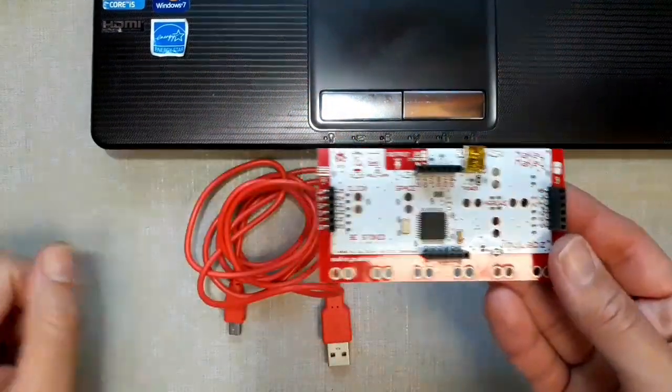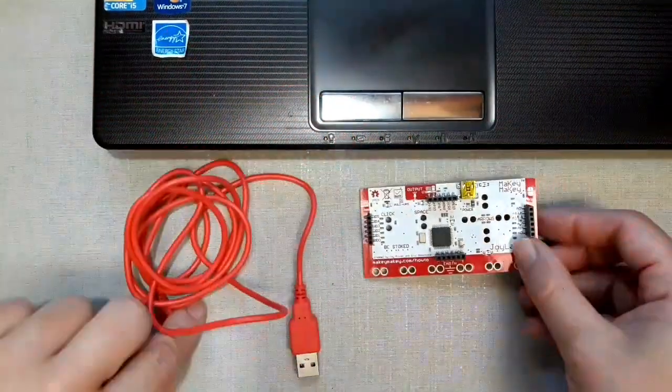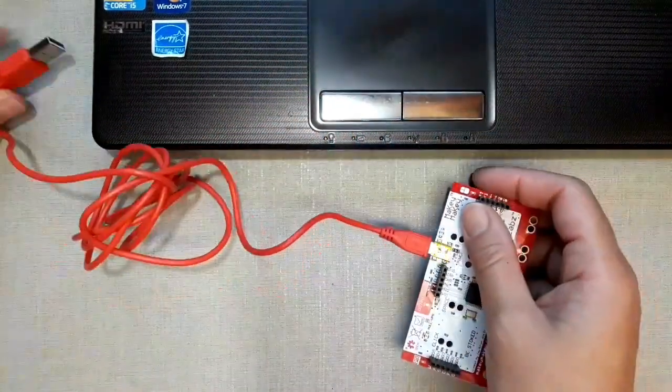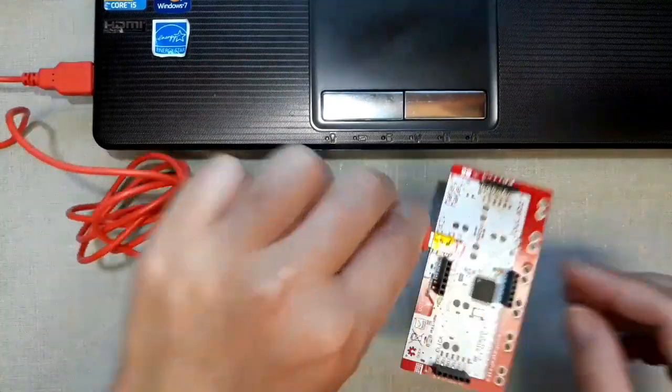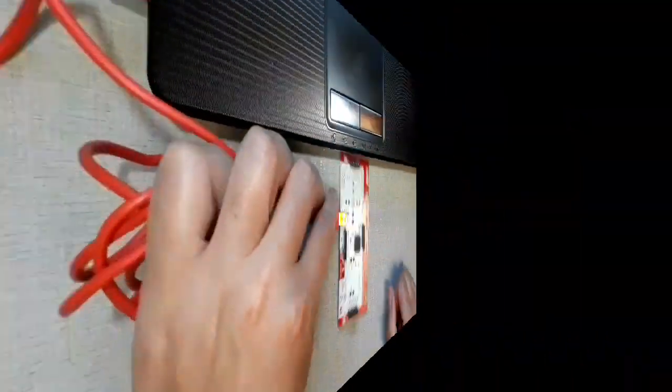Step 1. Connect the Makey Makey Board to your computer with the USB cable. Once connected, you should see the red light on the Makey Makey Board turn on.